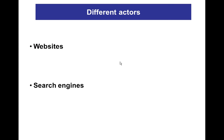Google helps internet users by collecting and ranking web pages in order to provide relevant information. By selecting search terms, building queries, and trying to evaluate documents, internet users are another actor in the quality of health information.